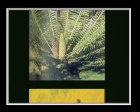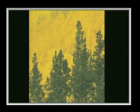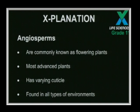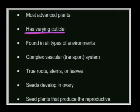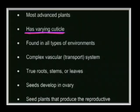Let's move on to the last group — the angiosperms, your flowering plants — some of the most advanced plants on the planet. They have a varying cuticle: hydrophytes, found in large amounts of water, have the thinnest cuticle; mesophytes in moderate water; and xerophytes — which include cacti found in deserts — have the thickest cuticle to prevent excessive water loss.